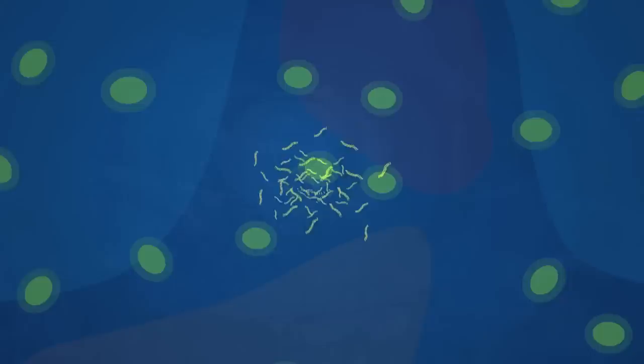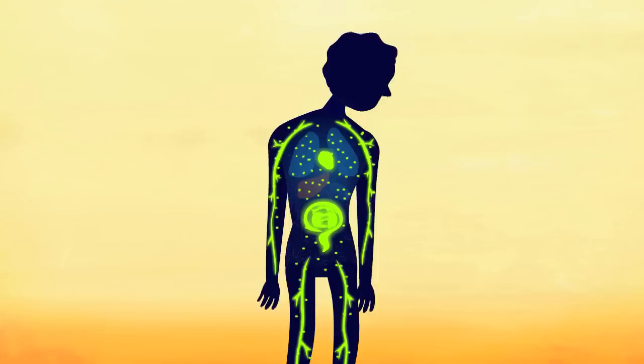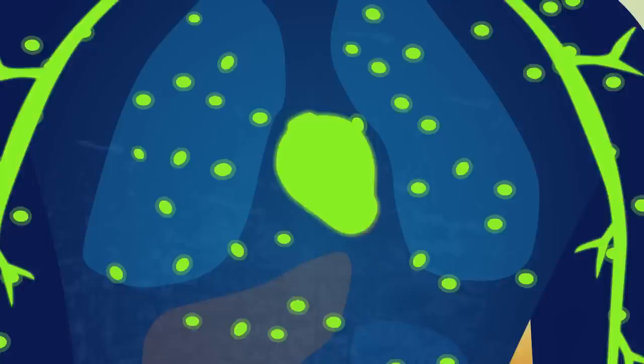Depending on where the amyloid accumulates, such as in the kidneys, heart, nerves or gastrointestinal tract, different symptoms become apparent as those organs are affected.